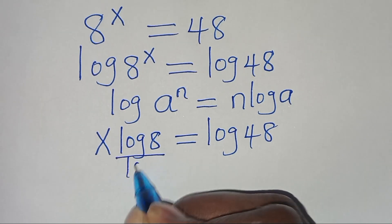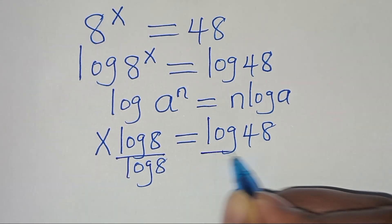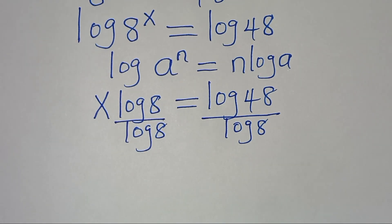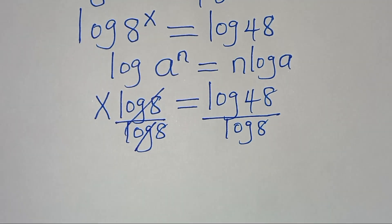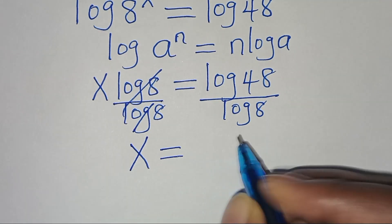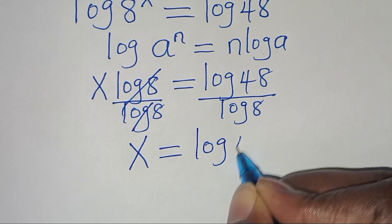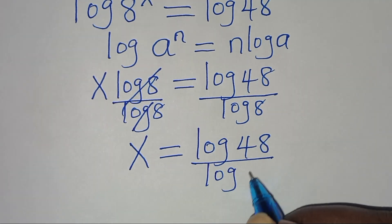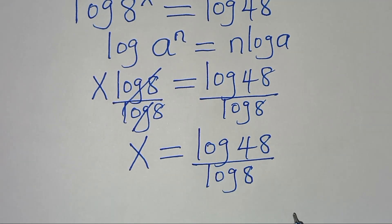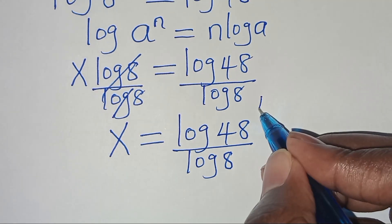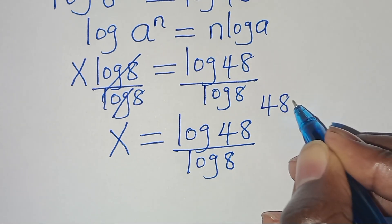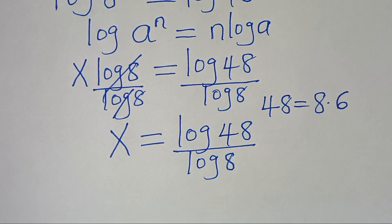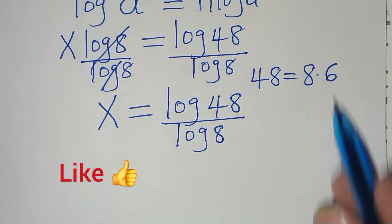The next step is to divide both sides by log(8). We simplify log(8) divided by log(8), so that x equals log(48) divided by log(8). We can express 48 as 8 times 6, so let's substitute this.